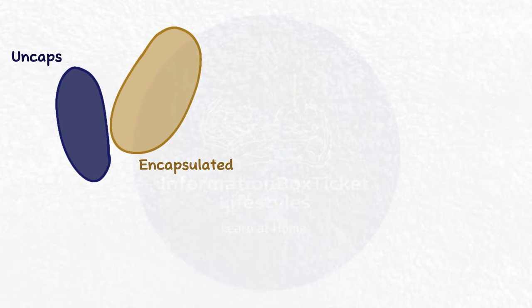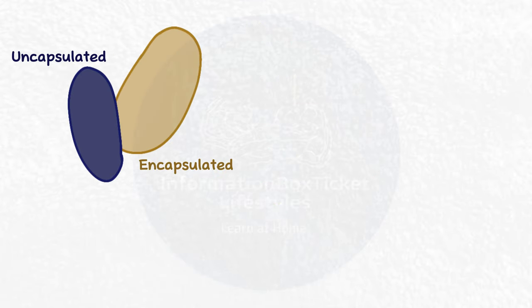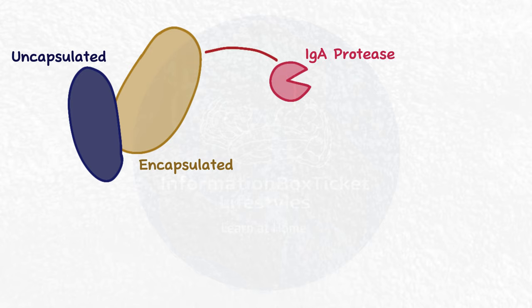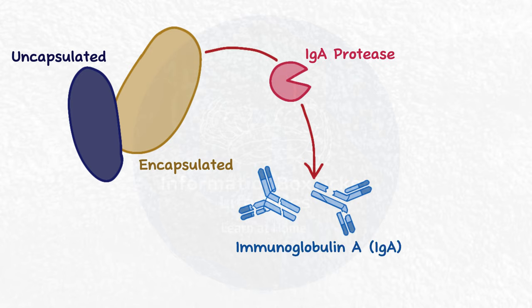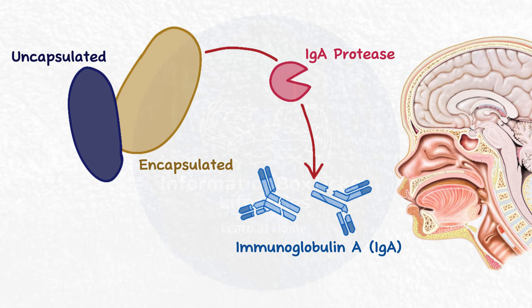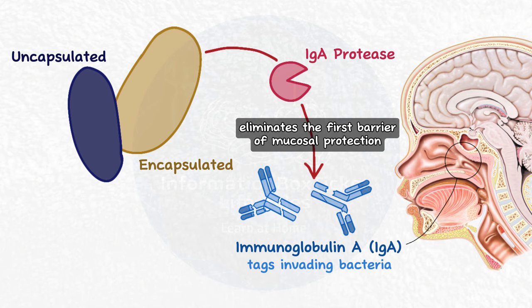Furthermore, both encapsulated and unencapsulated strains produce IgA protease, a toxic protein that degrades immunoglobulin A (IgA). IgA is an immune system protein present in nasopharyngeal mucosa secretions that ordinarily tags invading bacteria, allowing neutrophils to detect and eliminate them. So IgA protease eliminates the first barrier of mucosal protection.